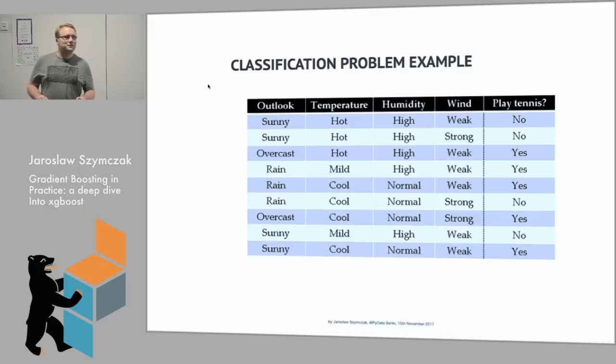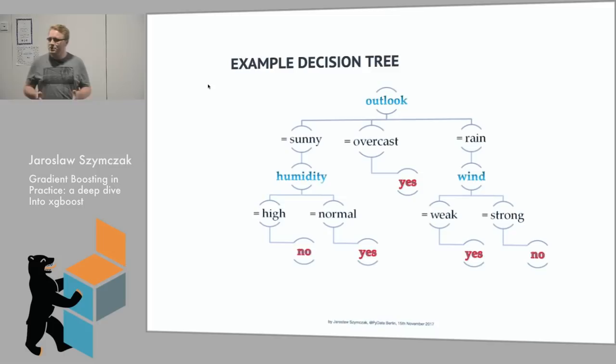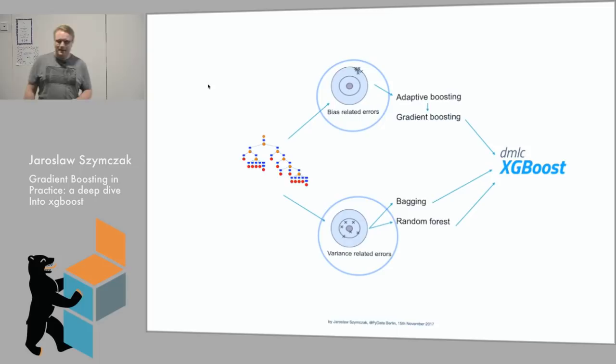A very classical example from one of the machine learning books. You have some features describing the weather and you'd like to know whether this weather is good to play tennis or not. Based on these features, with some classic algorithms that use certain measures like Gini index or entropy for information or gain ratio, you create the tree. And the tree is your classifier.